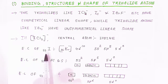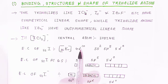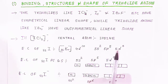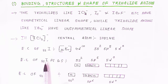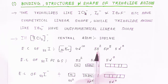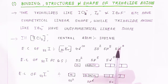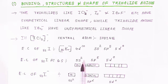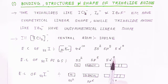The electronic configuration of iodine (53) is: [Kr]36, 4d¹⁰, 5s², 5p⁵, 5d⁰. At the ground state, only the valence atomic orbitals participate in the bonding, so we write only 5s², 5p⁵, 5d⁰. In the diagrammatic representation: 5s² has two paired electrons, 5p⁵ has two pairs and one unpaired electron, and 5d⁰ has no electrons.